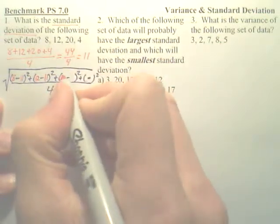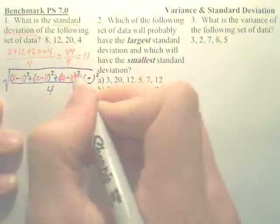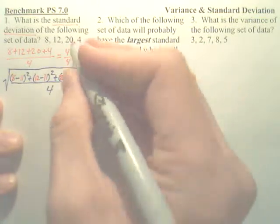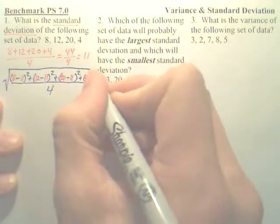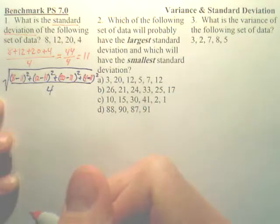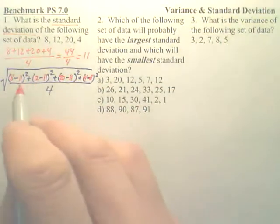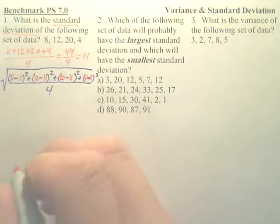You take the third term, 20, subtract the mean, and square it. And then you take the last term, which is 4, subtract the mean, and then square it. And then that answer divided by 4, and then square root it.